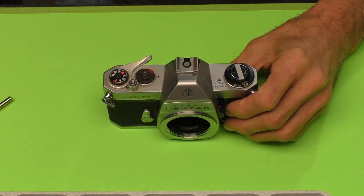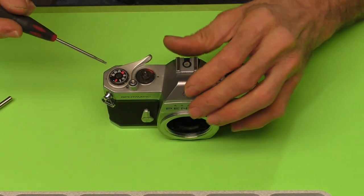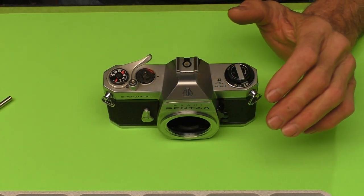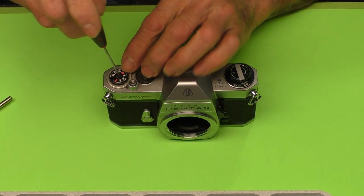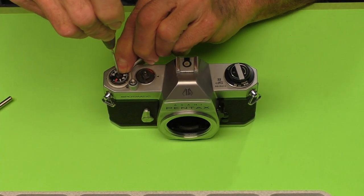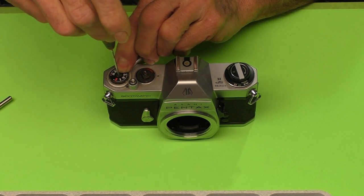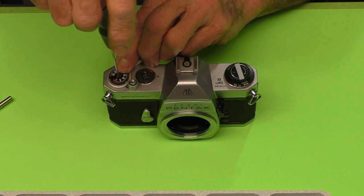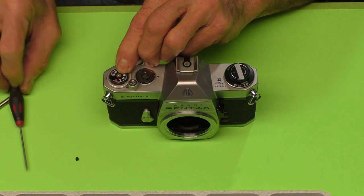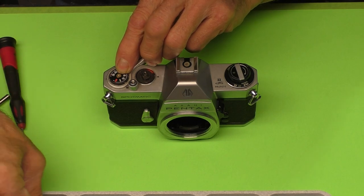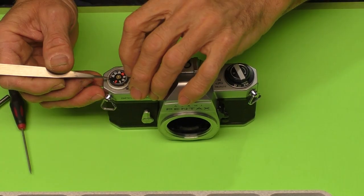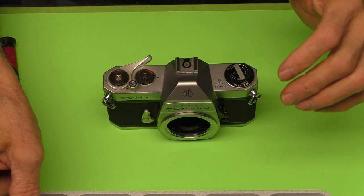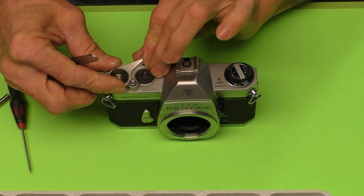Now, we've got a flat slot screwdriver there. I'm not sure if this is left or right-hand thread. So, let's try left. I had a feeling it might be a left-hand thread, and it is. Let's get that off. Set that in the tray. And now we can lift off the film counter dial, the exposure dial.